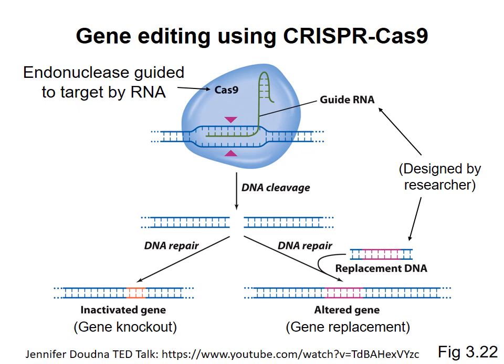CRISPR-Cas9 has made it much easier to create transgenic organisms, enabling us to study gene function in the whole organism. But to be useful, we need to have a lot of information about the genome of the organism under study. In the next series of videos, I'll go over some basics of sequencing and annotating genomes.